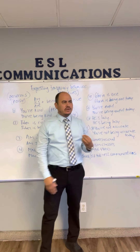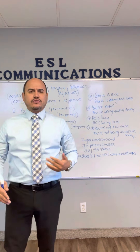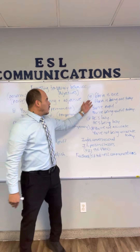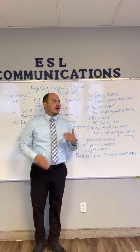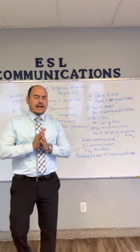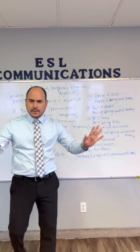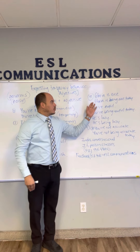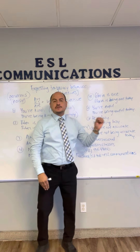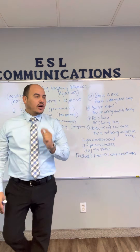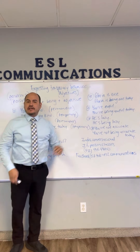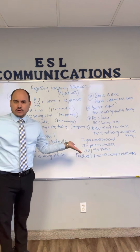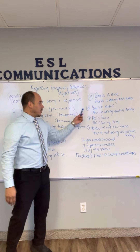Number five: 'nice.' Nice — una persona agradable. Permanent: 'Gloria is nice' — ella es agradable. Temporary, just this moment: 'Gloria is being nice today' — she is acting very pleasantly today.